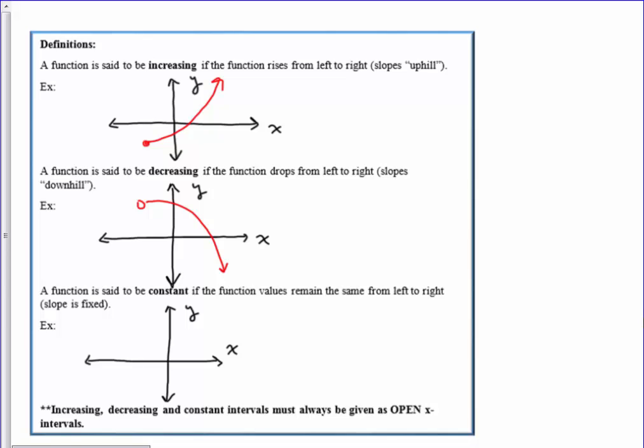And then finally, a function is said to be constant if the function values remain the same from left to right. This would be an example of a function that would be constant.